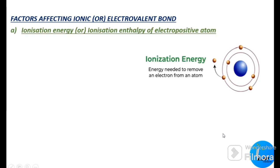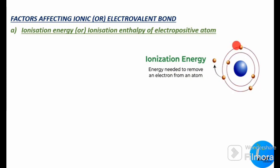The first factor affecting the ionic bond is ionization energy. What is ionization energy, or ionization enthalpy of an electropositive atom? It is the energy needed to remove the outermost electron present in the valence shell — the energy needed to remove an electron from an atom.